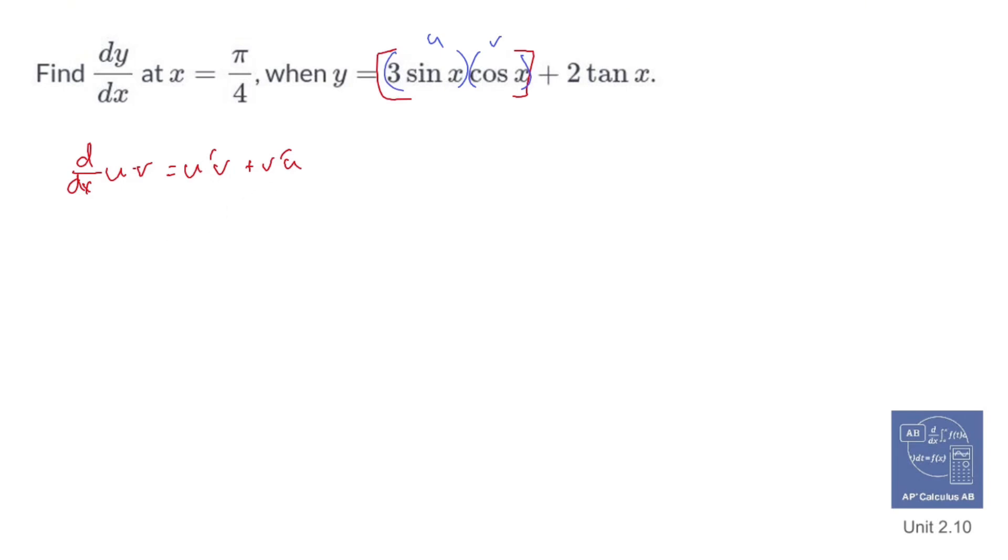So when I do this guy, if I called U 3 sine x, then U prime is going to be 3 cos x. V prime is going to be the derivative of cosine, which is negative sine x.